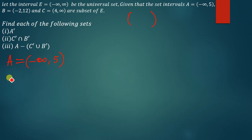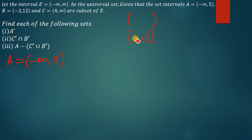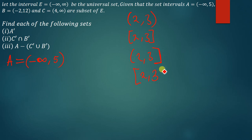Before talking about the complement, let me explain the bracket types. Square brackets mean the endpoint is included — for example, [2, 3] means 2 and 3 are both part of the interval set. A mix like (2, 3] means 3 is part of the set but 2 is not. And [2, 3) means 2 is part of the set but 3 is not. The numbers between 2 and 3 are always part of the set in each case.